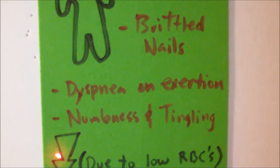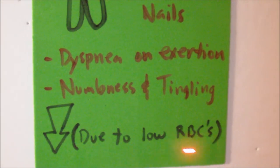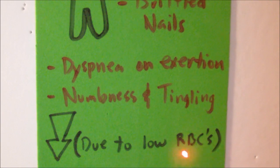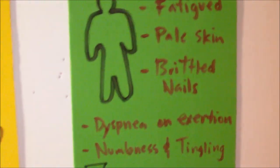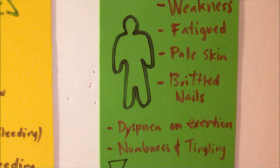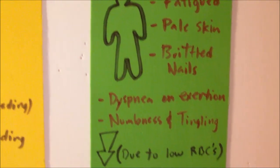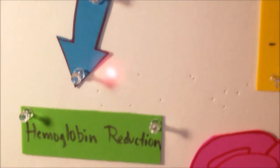These symptoms are manifested due to the fact that there is inadequate red blood cell production in the body. As a result of the inadequate red blood cells, there is less hemoglobin, and as we know, hemoglobin is responsible for transporting oxygen to and from the cells — therefore there's less oxygen in the body.